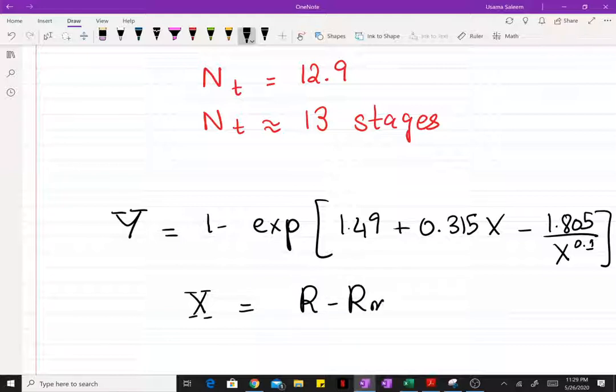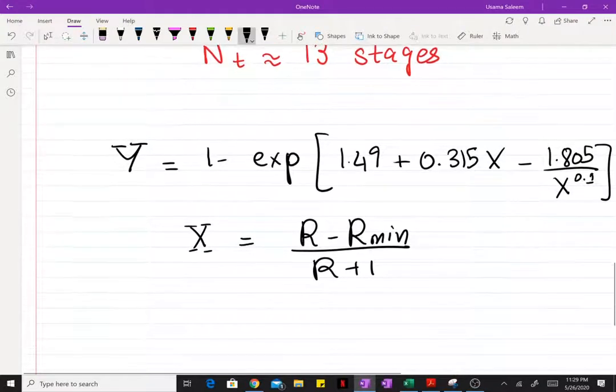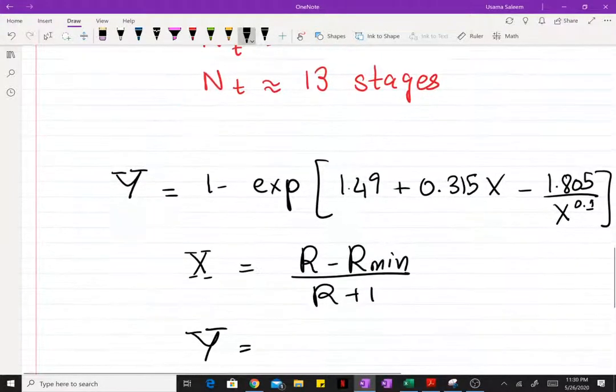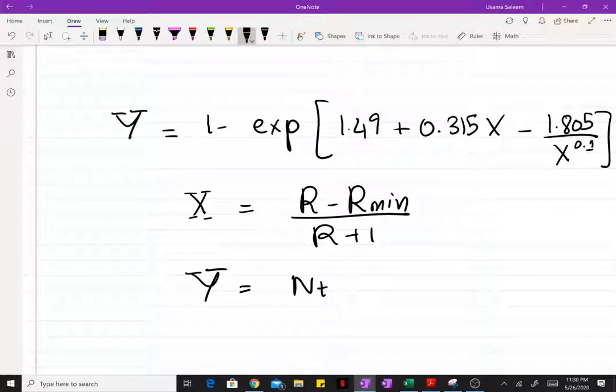Where x is once again your R minus R_min over R plus 1, and y is once again number of trays minus number of minimum stages.